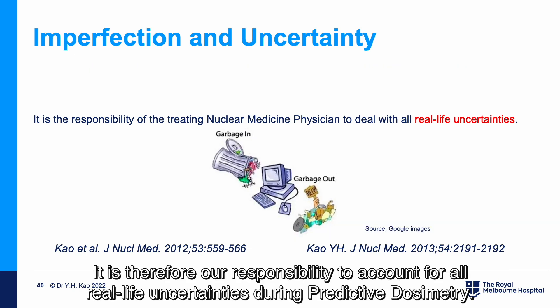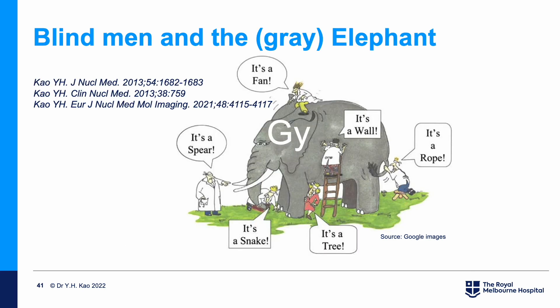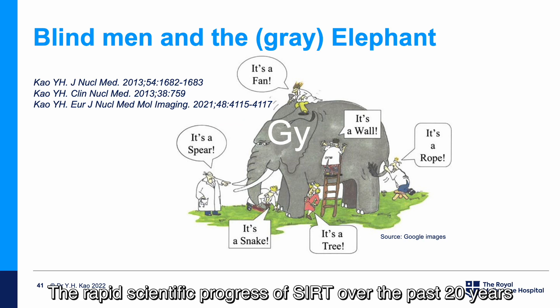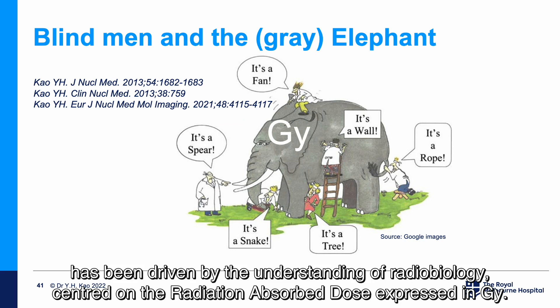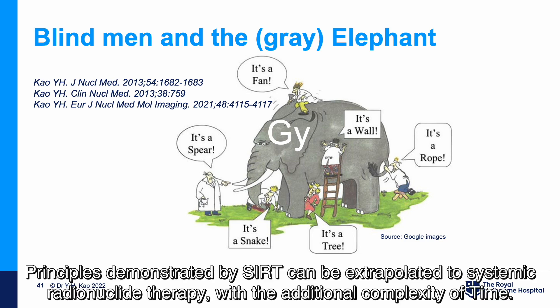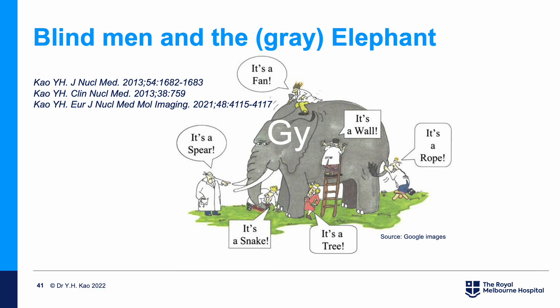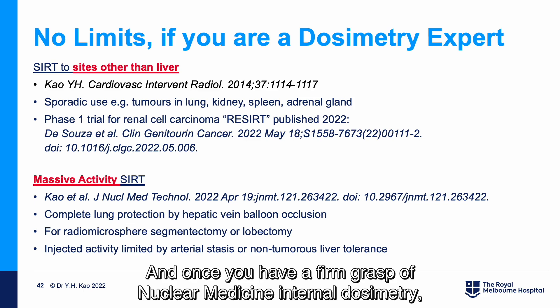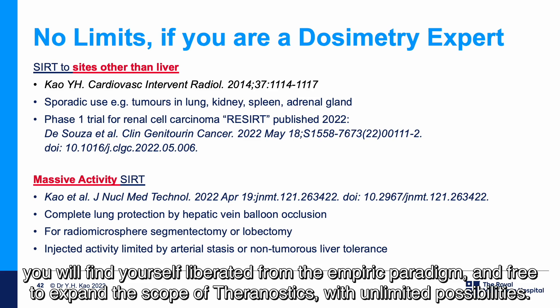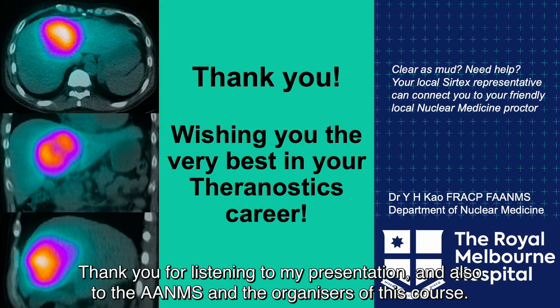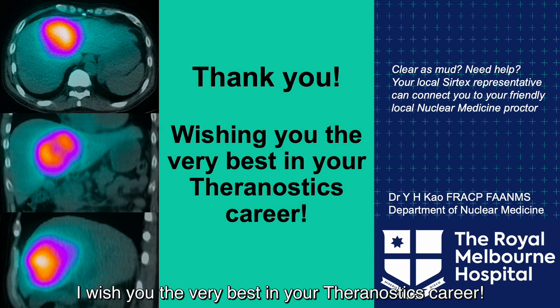The rapid scientific progress of SIRT over the past 20 years has been driven by the understanding of radiobiology, centered on the radiation-absorbed dose expressed in grey. Principles demonstrated by SIRT can be extrapolated to systemic radionuclide therapy with the additional complexity of time. Once you have a firm grasp of nuclear medicine internal dosimetry, you will find yourself liberated from the empiric paradigm and free to expand the scope of theranostics with unlimited possibilities. Thank you for listening, and I wish you the very best in your theranostics career.